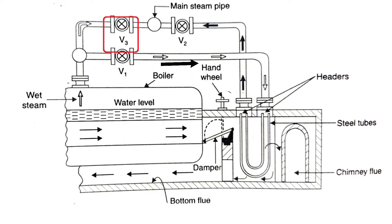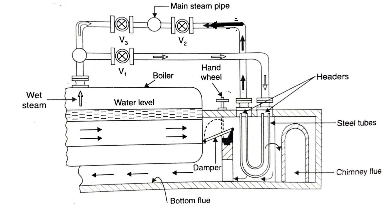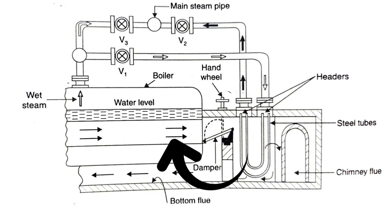When the superheater is in action, valve V3 is closed and valves V1 and V2 are open. At that time, the steam passes through the pipeline, then through the U-tube coil of the superheater, then through valve V2, and is supplied to the turbine. The path of the gases is controlled by a damper which is operated by a hand wheel.